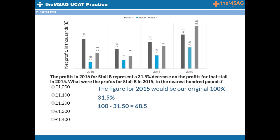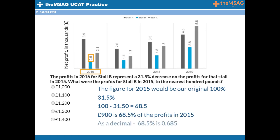Look at the chart to find the profits in 2016 for stall B. The number on the blue bar is 0.9. From the title of the chart, we know that this means £0.9000, better known as £900. This is 68.5% of the profits in 2015. As a decimal, 68.5% is 0.685. £900 divided by 0.685 gives us £1,314, which rounds up to £1,300, making D the correct answer.